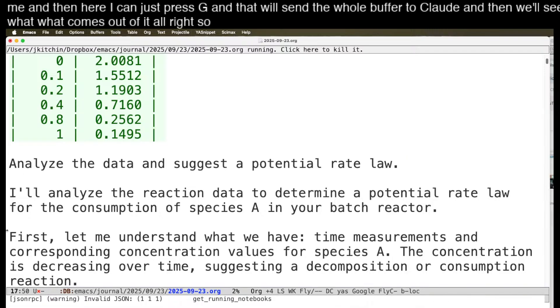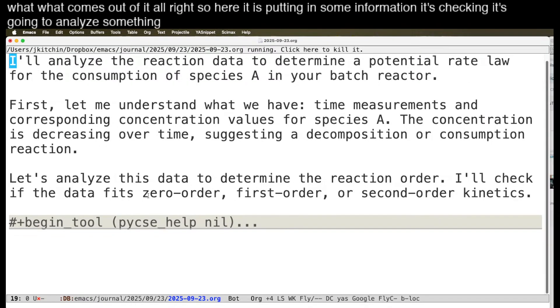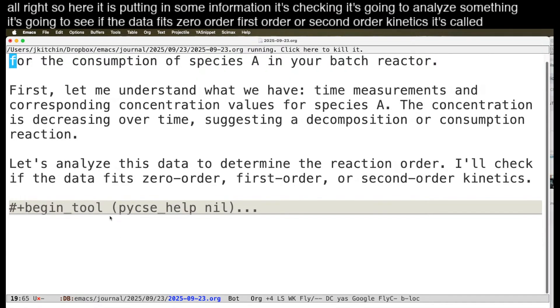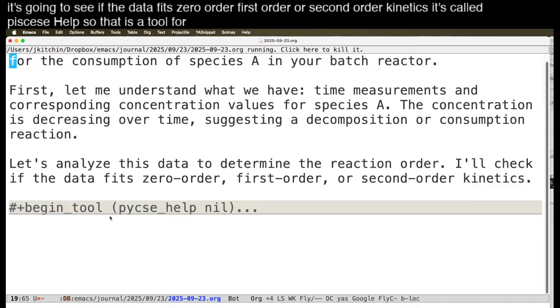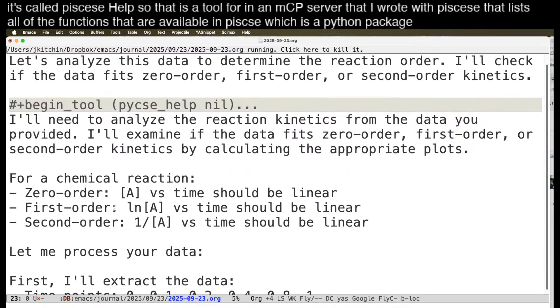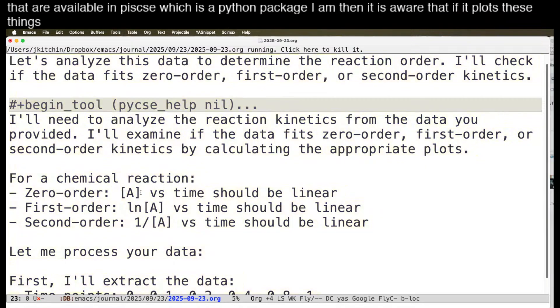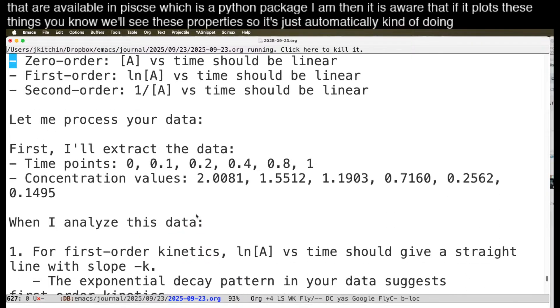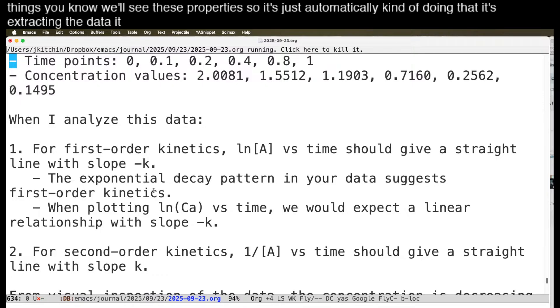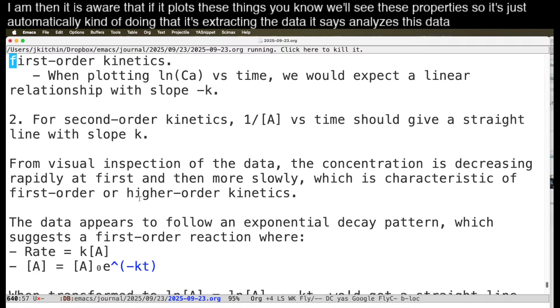Alright. So here it is putting in some information. It's checking. It's going to analyze something. It's going to see if the data fits zero order, first order, or second order kinetics. It's called PyCSE Help. So that is a tool in an MCP server that I wrote with PyCSE that lists all of the functions that are available in PyCSE, which is a Python package. And then it is aware that if it plots these things, we'll see these properties. So it's just automatically kind of doing that. It's extracting the data. It says that it analyzes this data.